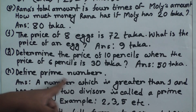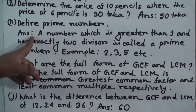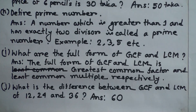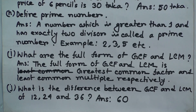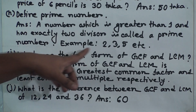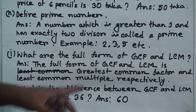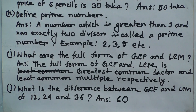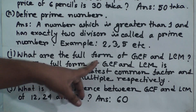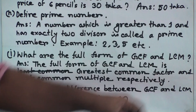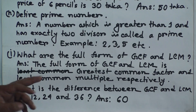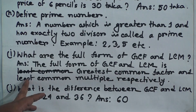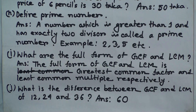(h) Define prime number. A number which is greater than one and has exactly two divisors is called a prime number — for example, 2, 3, 5, etc. You must write examples. (i) What are the full forms of GCF and LCM? GCF is Greatest Common Factor and LCM is Least Common Multiple, respectively.